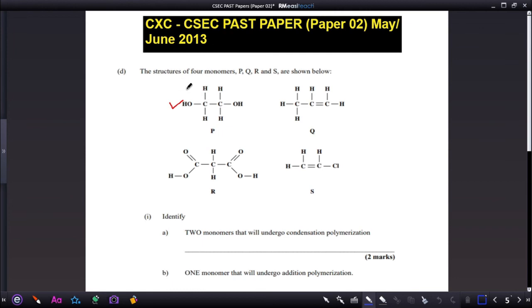Part D: the structure of four monomers P, Q, R, and S are shown below. Identify two monomers that will undergo condensation polymerization. This one, this one, and this one would undergo condensation polymerization. The others would be unsaturated, so they definitely undergo addition polymerization. So those compounds are P and R.